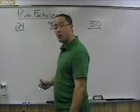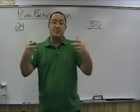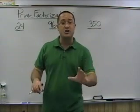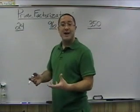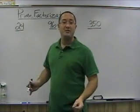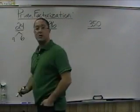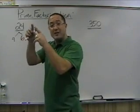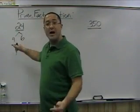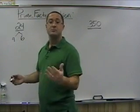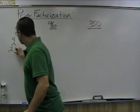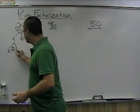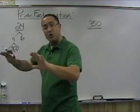Let's do the prime factorization of 24. We need two numbers that multiply to make 24 — not 1 times 24, because we cannot use 1 in prime factorization. Let's go with 4 times 6. Are either of these prime? No — so we keep breaking them down. 4 breaks into 2 times 2, and both of those are prime, so we circle them. That's where we stop for the 4 branch.